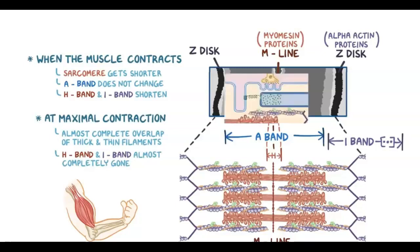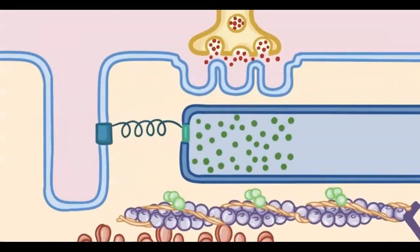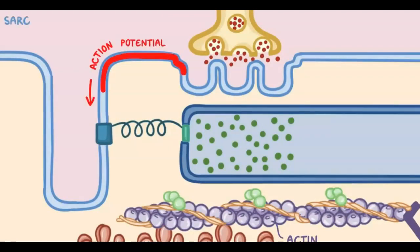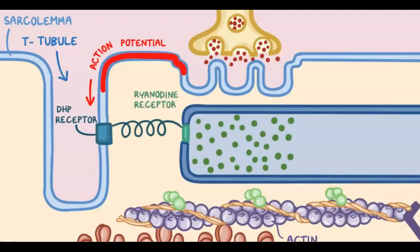So now let's zoom in and look at how the myosin thick filament interacts with the actin that makes up the thin filament. When an action potential travels along the sarcolemma and reaches the T-tubule, it stimulates dihydropyridine receptors, or DHP receptors. These receptors are physically connected to another receptor called the ryanodine receptor, on the sarcoplasmic reticulum.